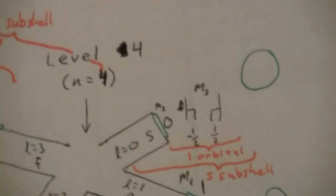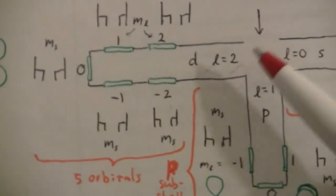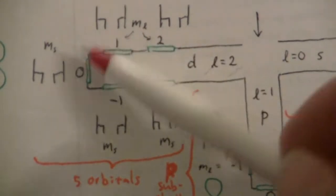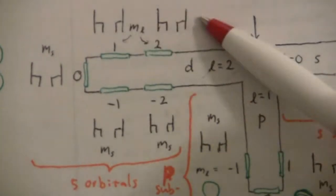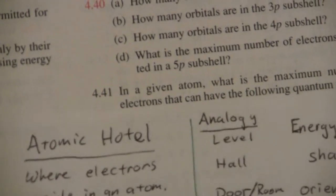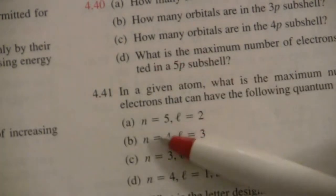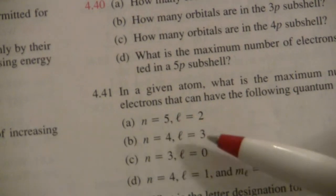So whether we're on level 4 or level 3, when l is 2, you still have those five doors, two electrons in each room. So there's 10 electrons that can have those two numbers. It doesn't matter what the level is there.